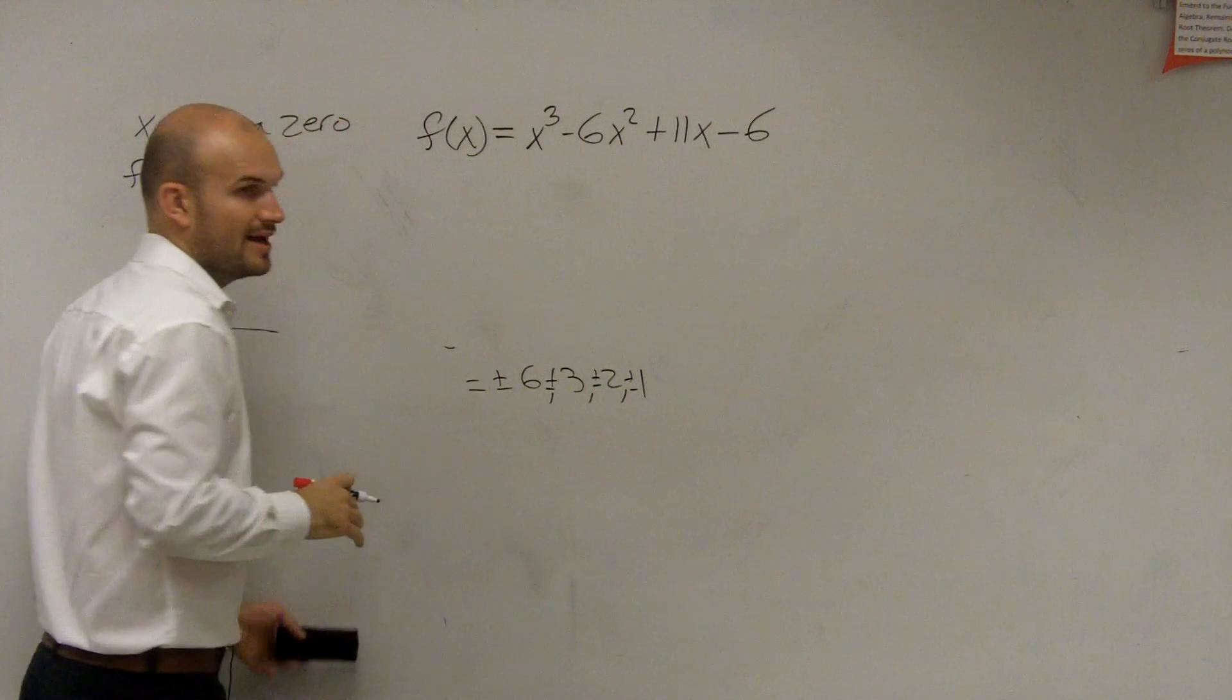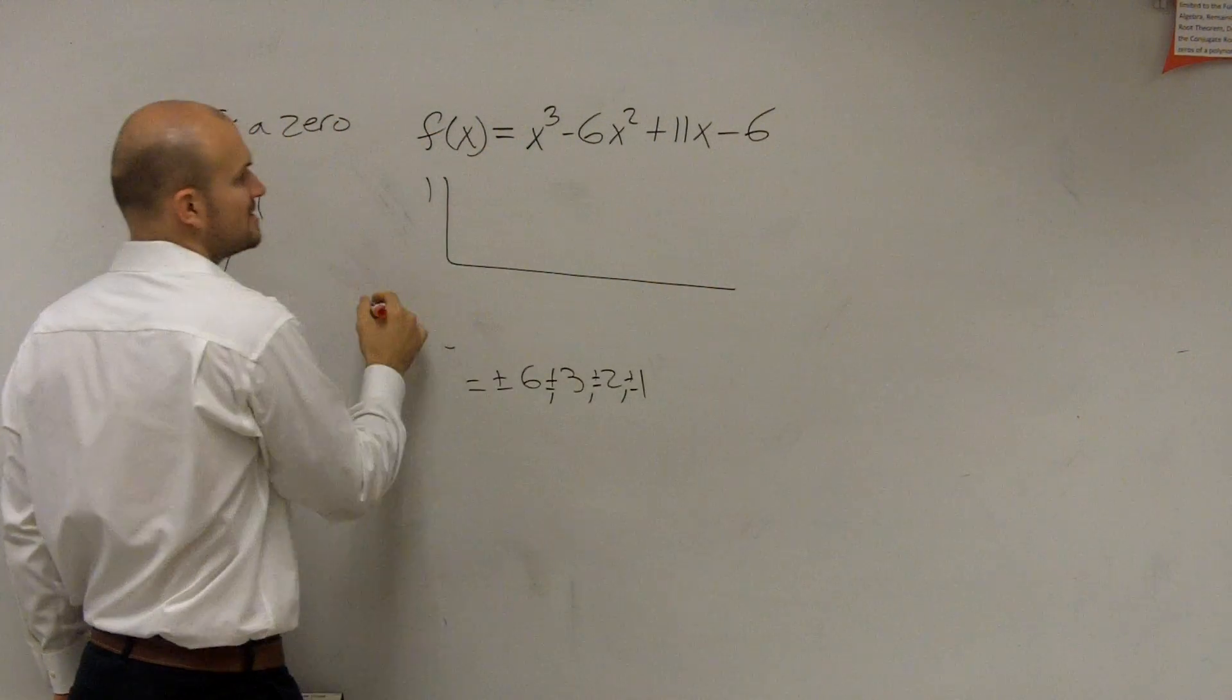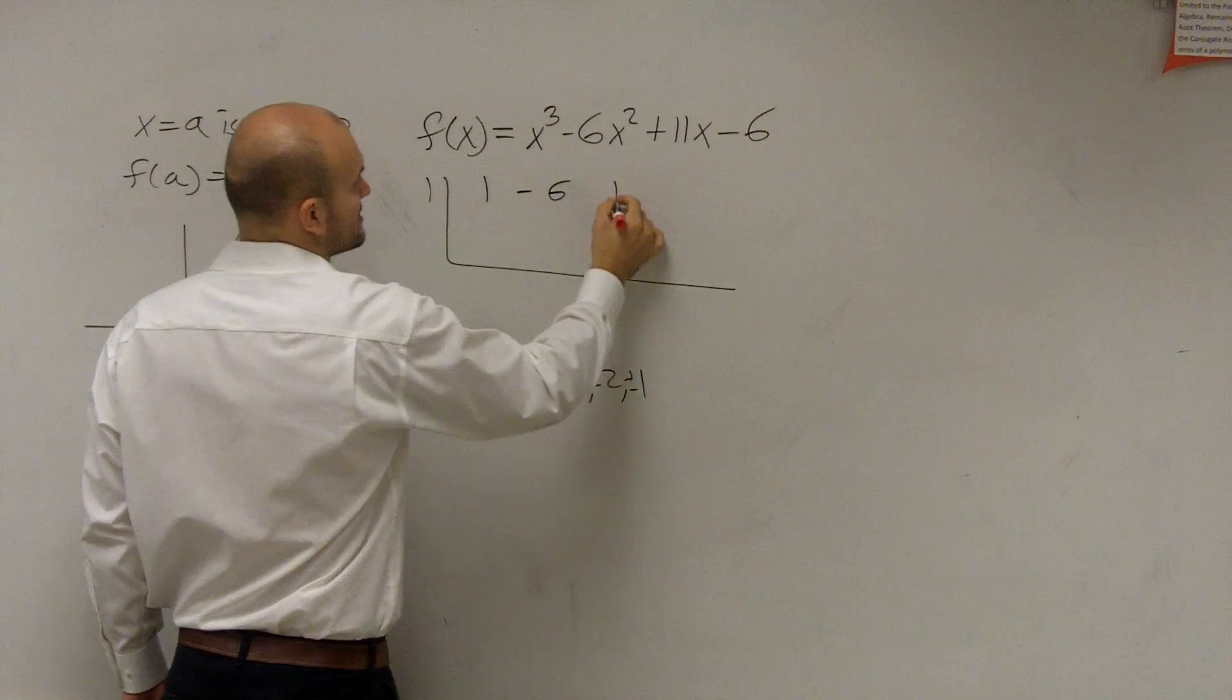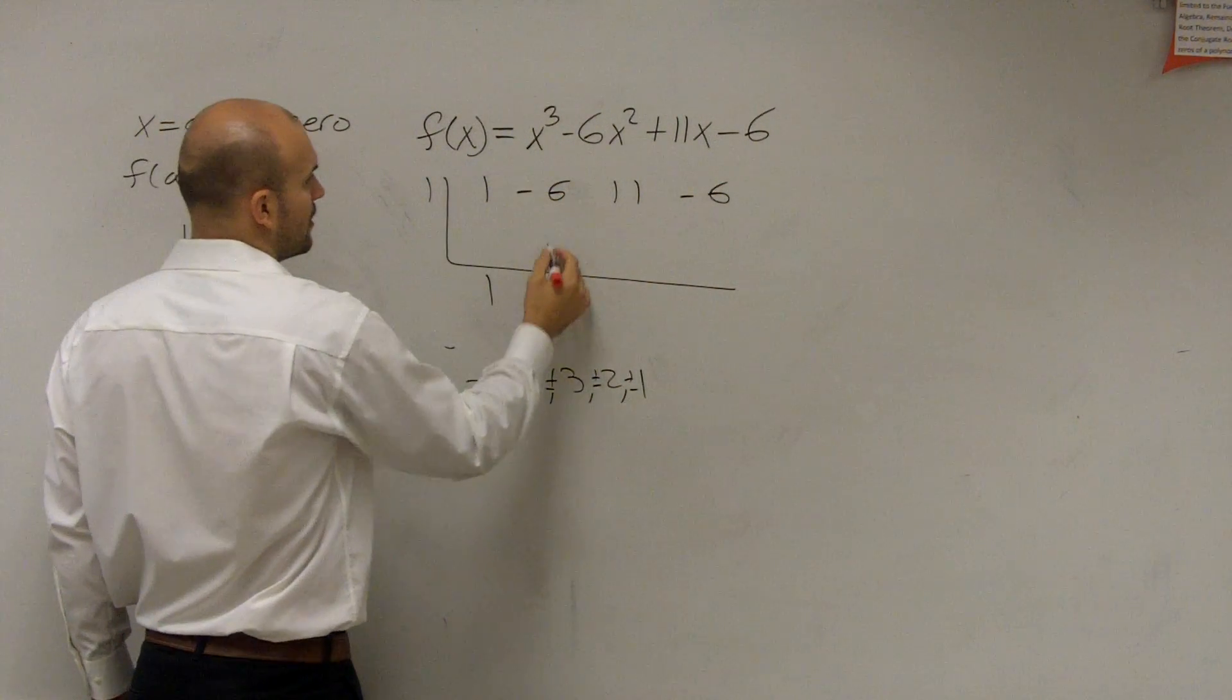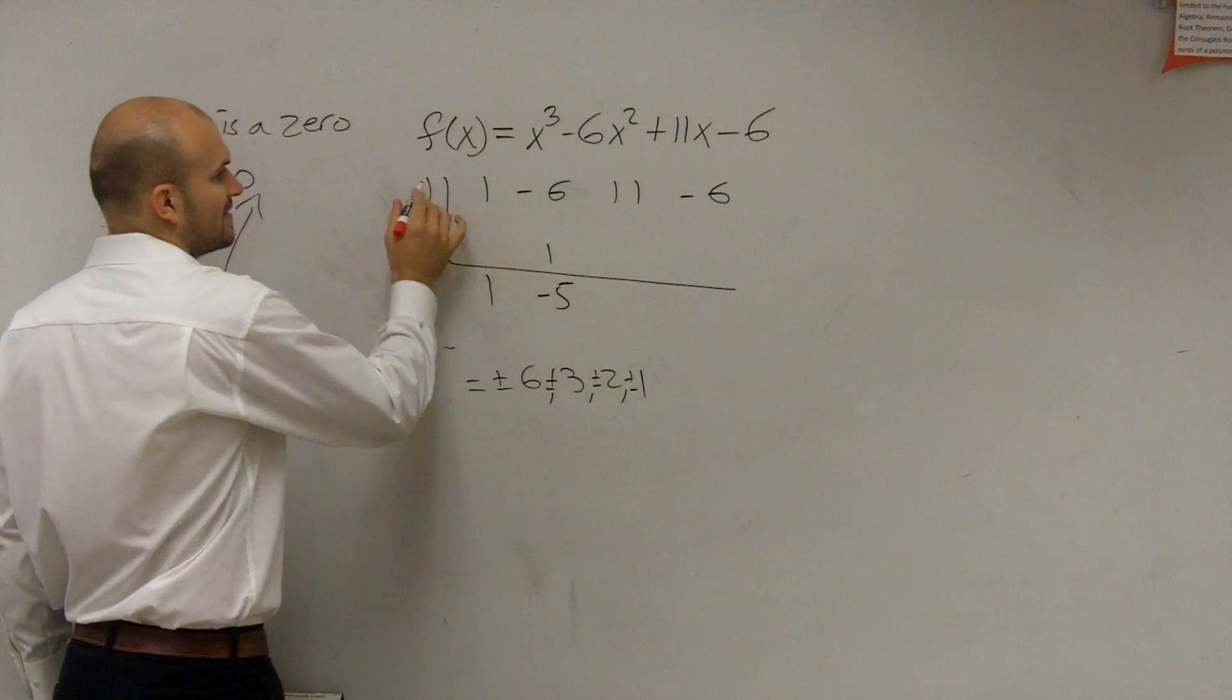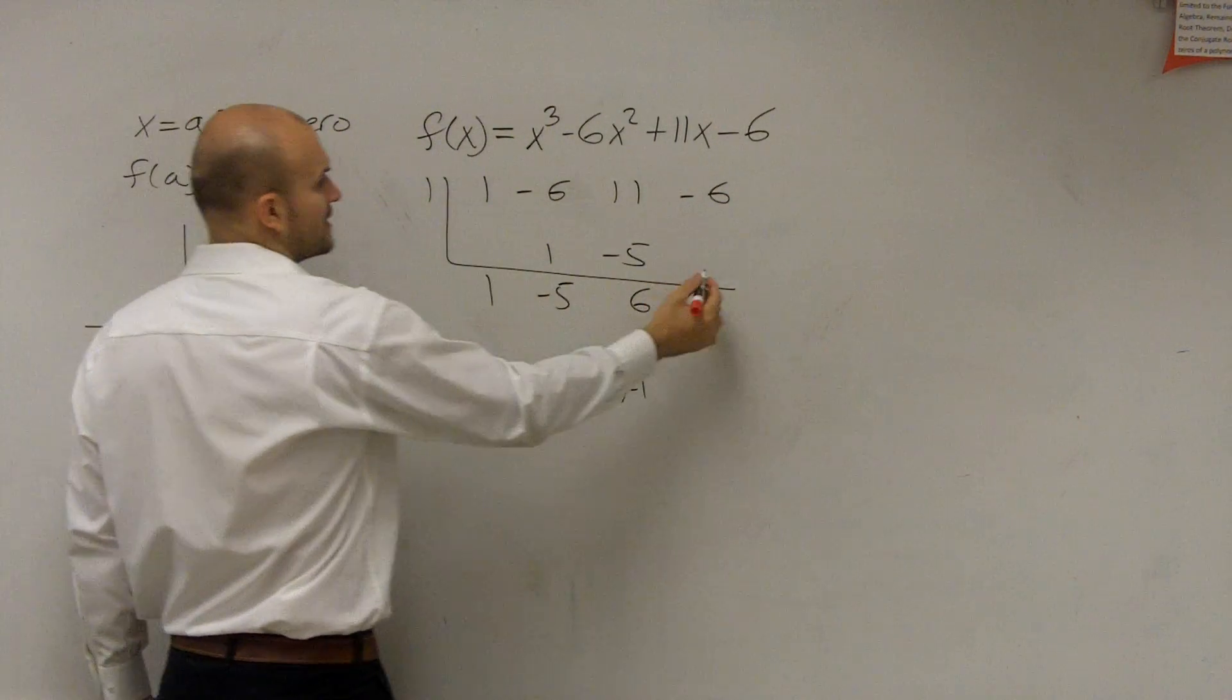So how do you verify that? I can use synthetic division. So by using synthetic division, 1, negative 6, 11, negative 6. Bring down the 1, 1 times 1 is 1. Negative 5, negative 5 times 1 is negative 5. Bring down that, get a 6. 6 times 1 is 6.